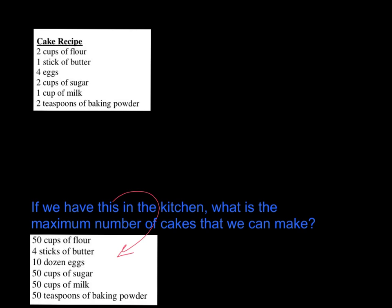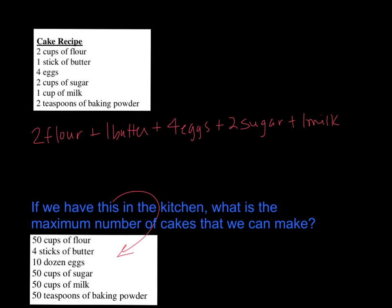We're going to start out with a cake recipe and make what looks like a reaction equation for it. This terrible cake recipe has absolutely no flavor in it. The reaction would be: two flour plus one butter plus four eggs plus two sugar plus one milk plus two baking powder, and that gives us one cake.